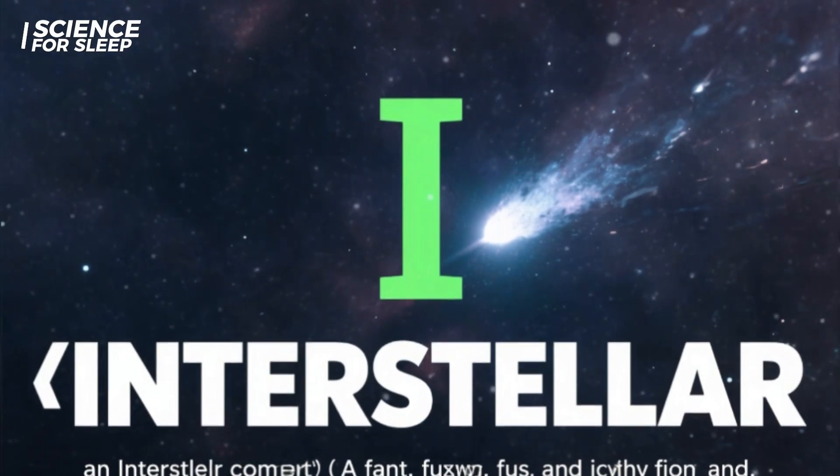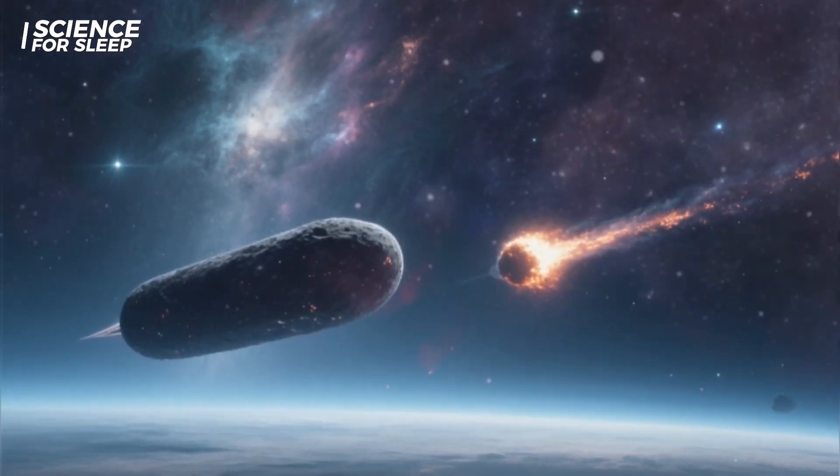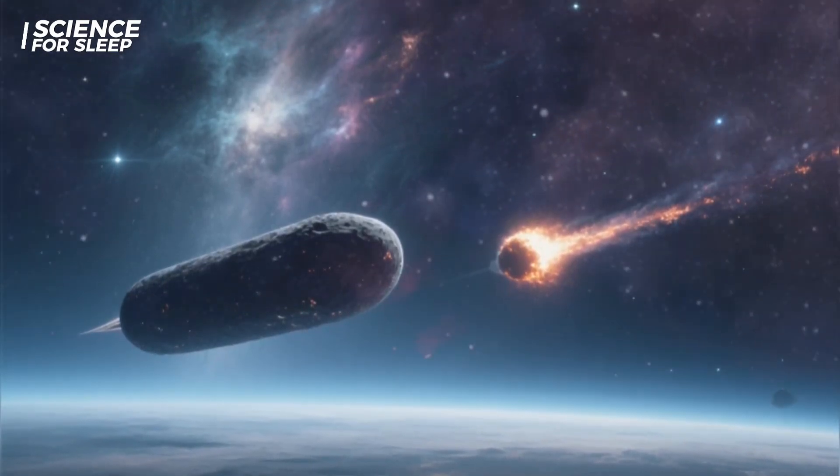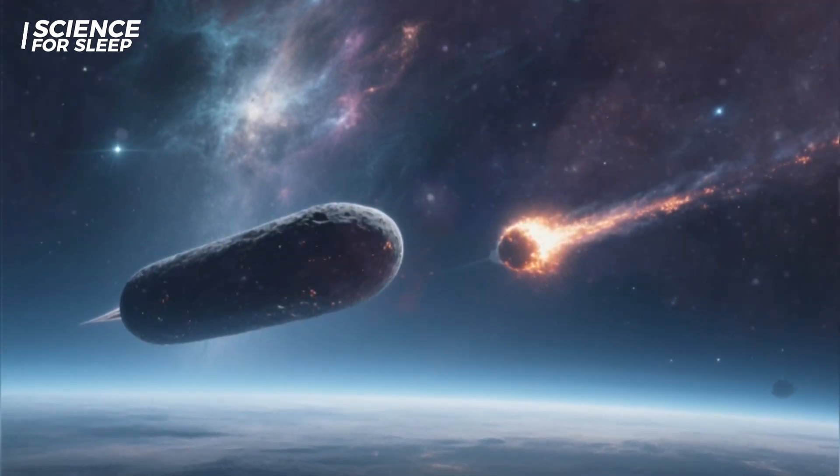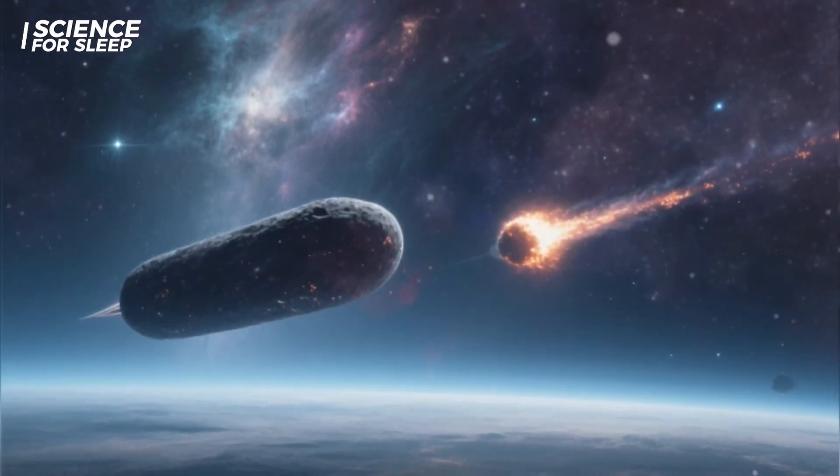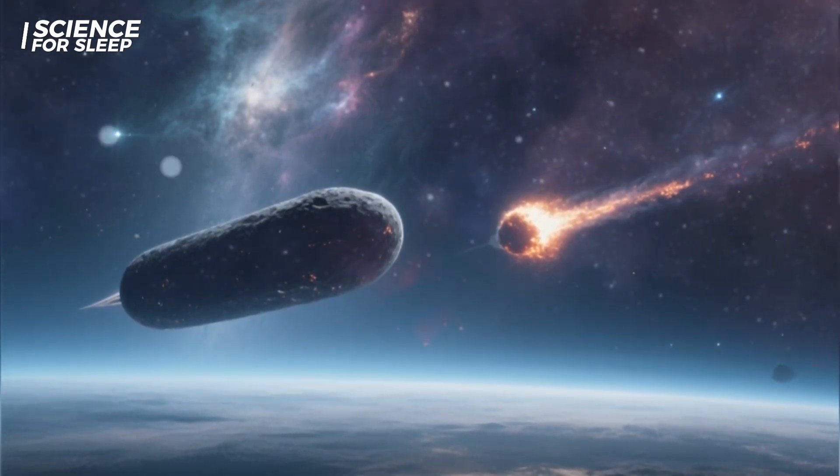The I in its name stands for interstellar. It was only the third such object we'd ever confirmed, following the strange cigar-shaped Oumuamua in 2017 and the more comet-like Borisov in 2019. Each one is a precious, unique messenger, a postcard from an alien star system delivered right to our doorstep.